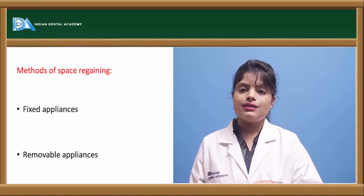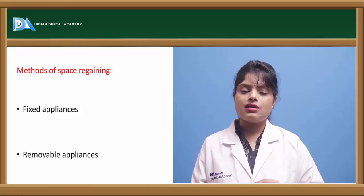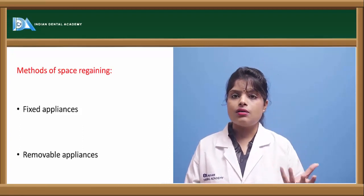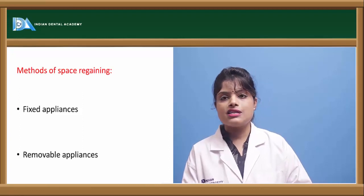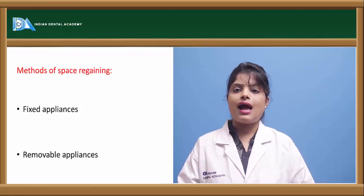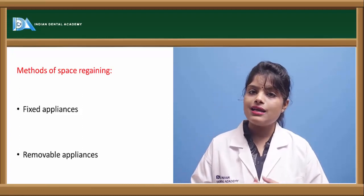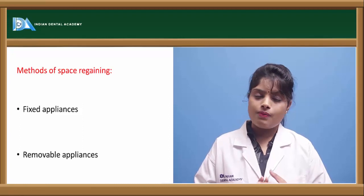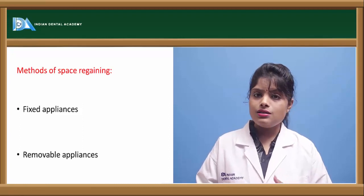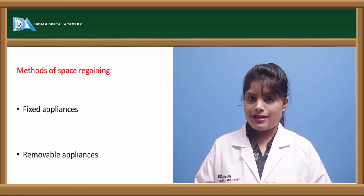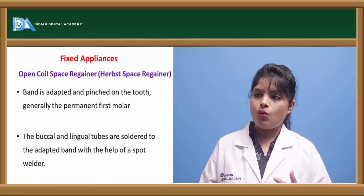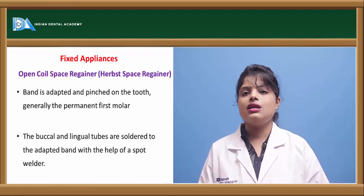There are various methods and appliances used for space regaining procedures. These can be either fixed appliances or removable appliances. Under fixed appliances comes the open coil space regainer.